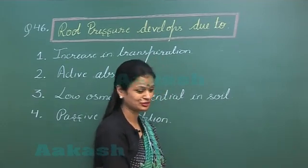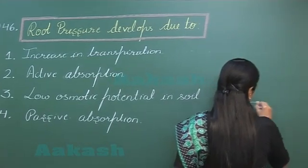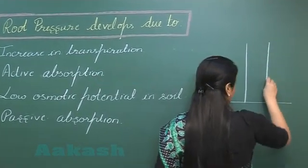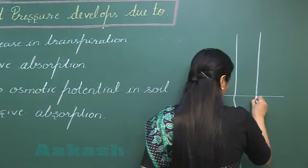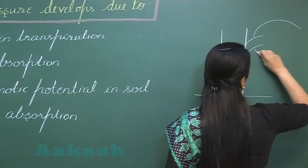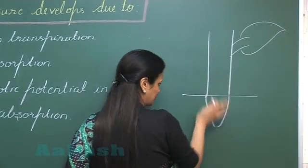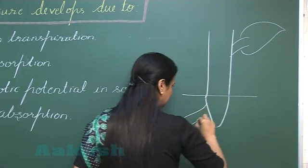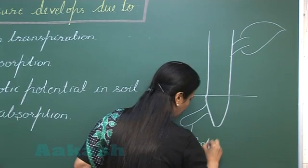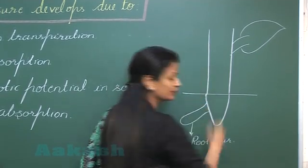To understand the root pressure, let's make a diagram here. So let's say this is a plant in which this is the shoot system where I'm making the leaf. This one is the root system, and the part which I have attached here is the root.